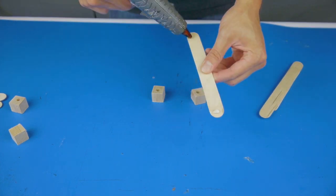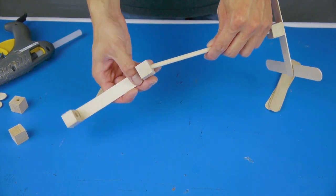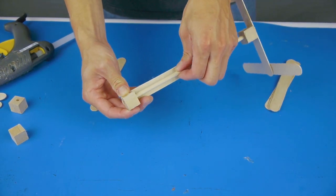Build the pivot column by gluing two cubes onto a craft stick, making sure that the holes are aligned. Stop here and make sure that it fits on the dowel and turns smoothly before continuing.